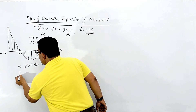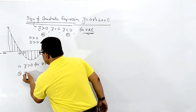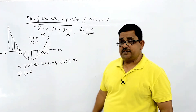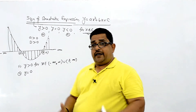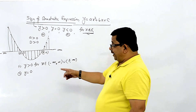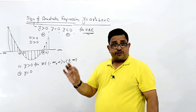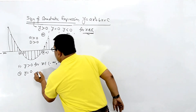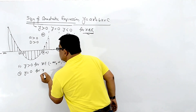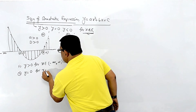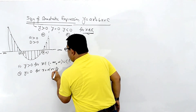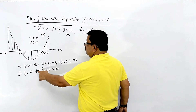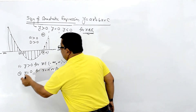Next, using the condition y is equal to 0: for a quadratic, y equals 0 at its roots. So y = 0 when x is equal to alpha or beta.